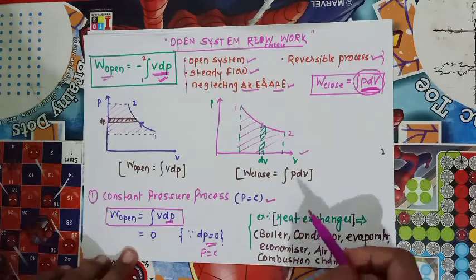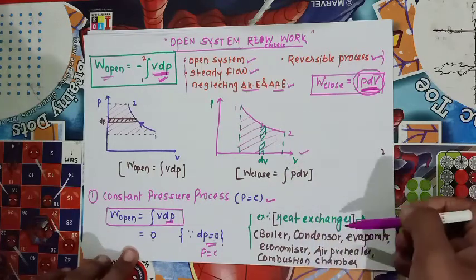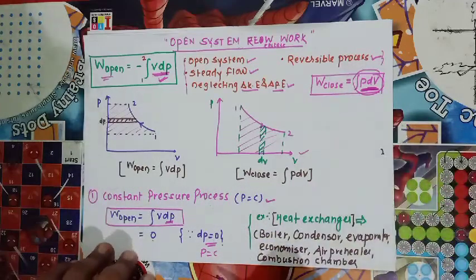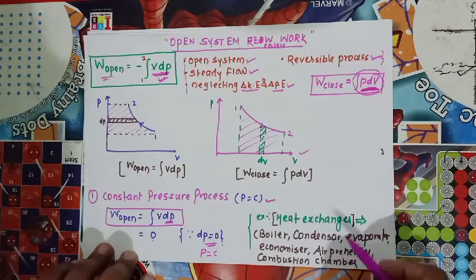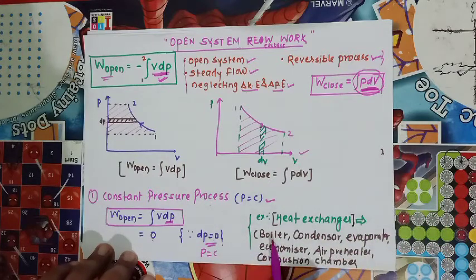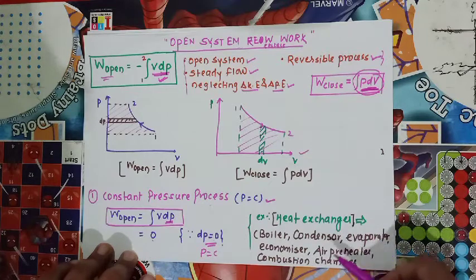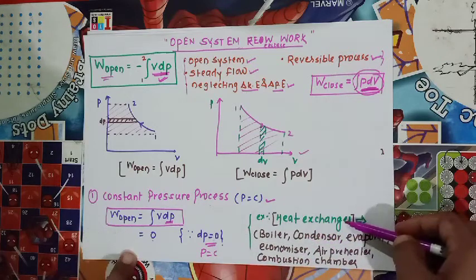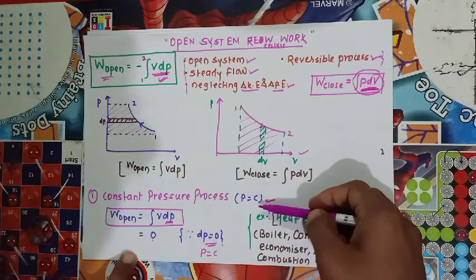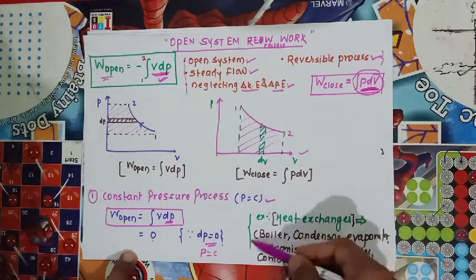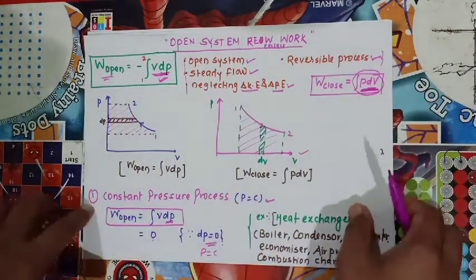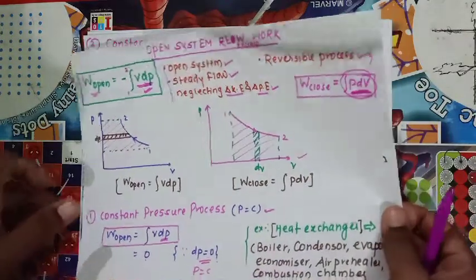All heat exchangers work under constant pressure. Heat exchangers are devices used to exchange heat. Common heat exchangers in thermodynamics include boiler, condenser, evaporator, economizer, air pre-heater, and combustion chamber. In all these devices, the open flow work is zero.